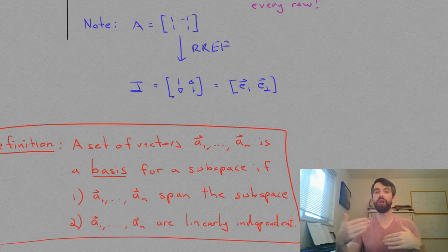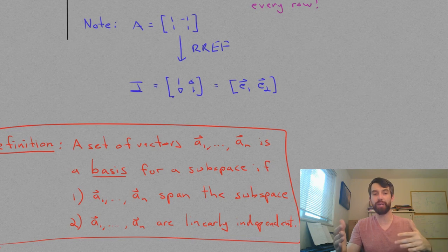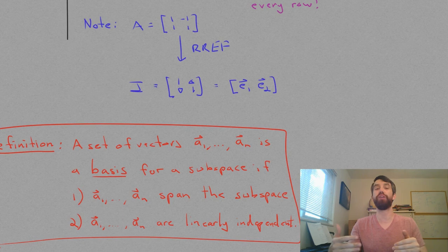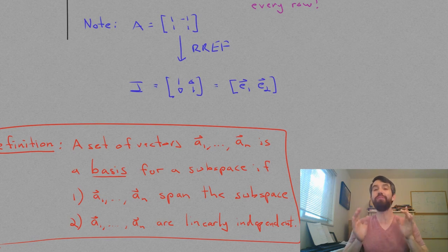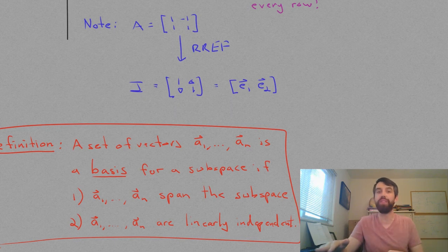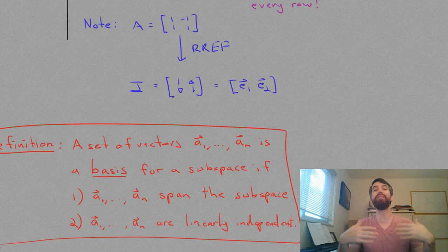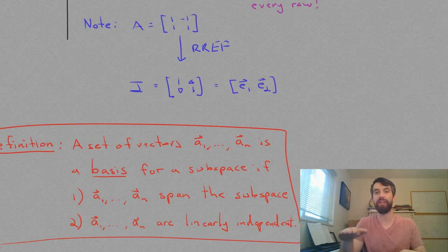So, having a basis is great. You know that linear combinations of the vectors span your subspace and, since they are linearly independent, you don't have any extra clutter. You don't have any extra vectors that you might need. You need every single vector that you have in your list.